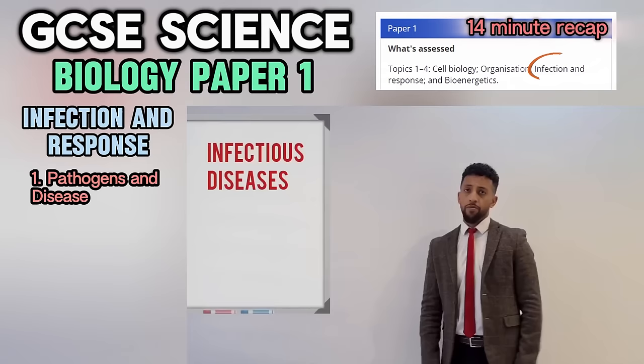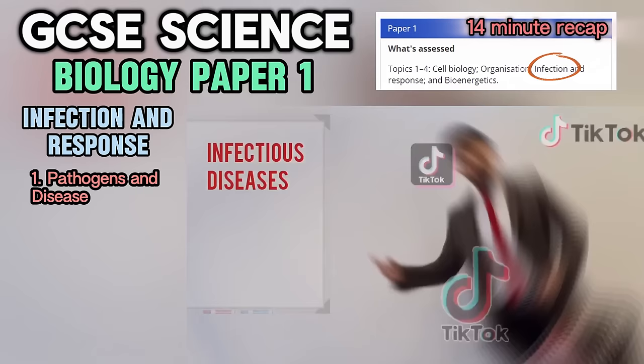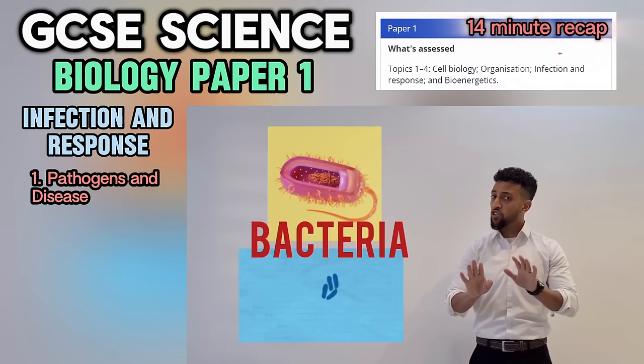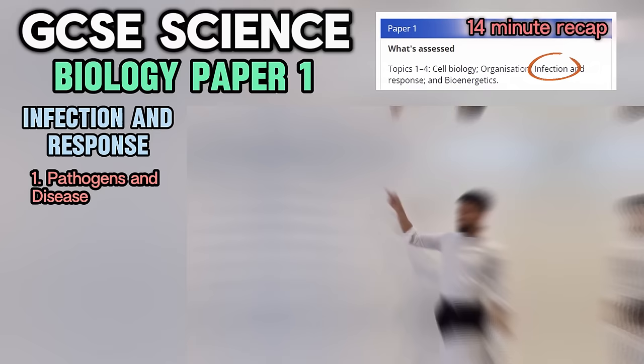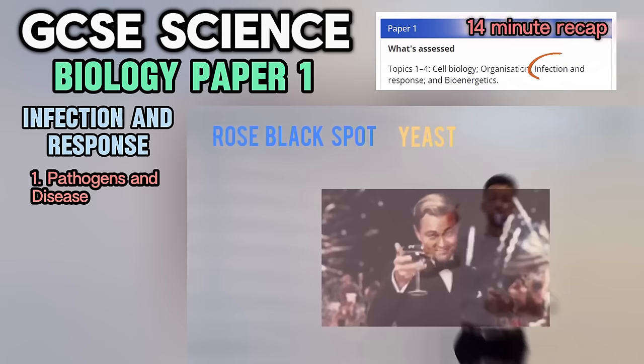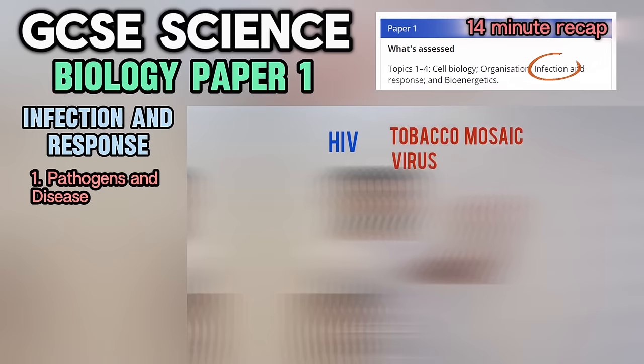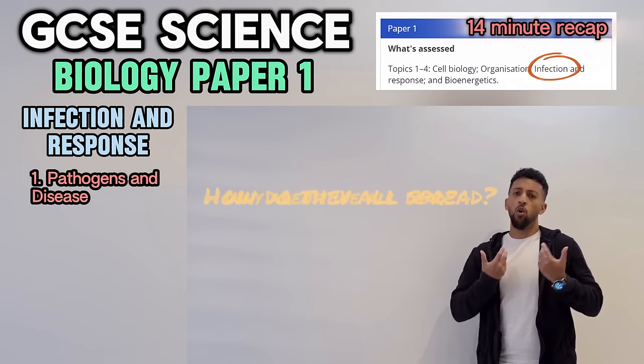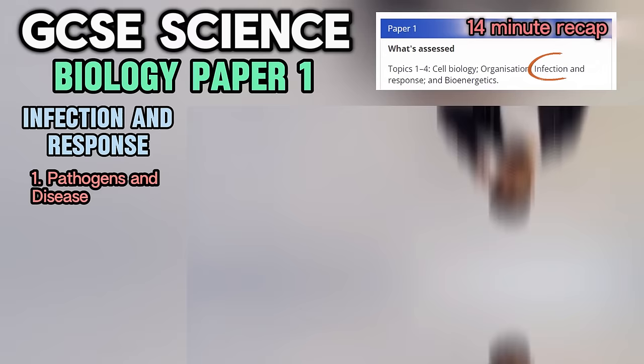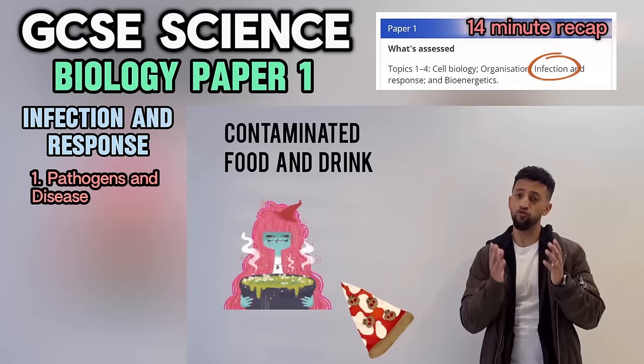You said you wanna study but you don't — you're scrolling on your phone. Microbes — if you catch a pathogen it will cause you harm. Bacteria divide rapidly — wash your hands. Salmonella and gonorrhoea are bacterial examples. Fungi is another type of microbe. Viruses can't live on their own — they need a host cell. HIV and tobacco mosaic virus are examples. Protist diseases include malaria.